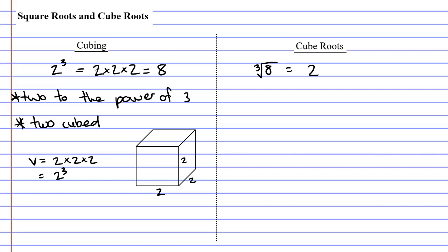The reason we put the 3 is to imply that we're looking for numbers that need to be multiplied 3 times, such that they equal 8. And once again, the three numbers need to be the same. So 2 times 2 times 2 equals 8. Therefore, the cubed root of 8 must equal 2.